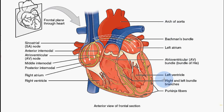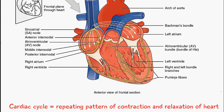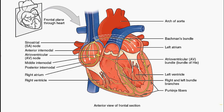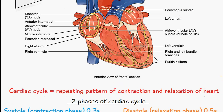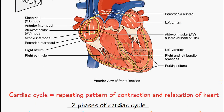There are other structures of importance — for example the sinoatrial node, the atrioventricular node, and the Purkinje fibers, which you can see here. But this video is just going to cover the basics of the cardiac cycle: we're going to look at systole, diastole, and a few definitions, and give you a brief introduction to the phases of the cardiac cycle.